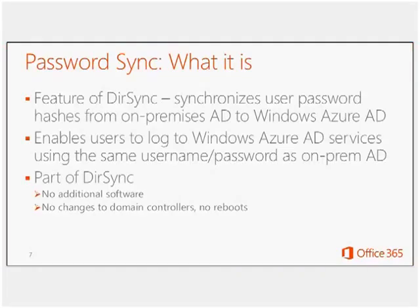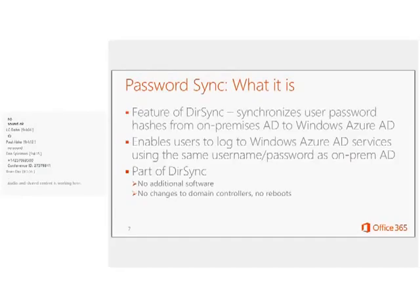What is Password Sync? It's a feature of the Windows Azure directory synchronization tool that allows you to synchronize user password hashes from an on-premises Active Directory to Windows Azure AD. This enables your customers to log on to Windows Azure AD services — such as Office 365, Intune, and CRM Online — with the same username and password that users use on their on-premises Active Directory. Because it's part of DirSync, there is no additional software to install.